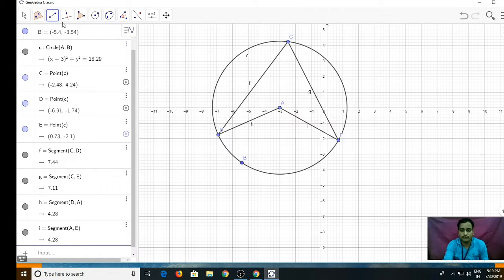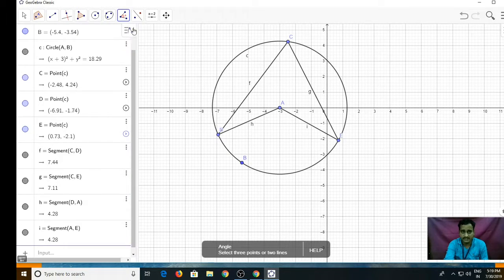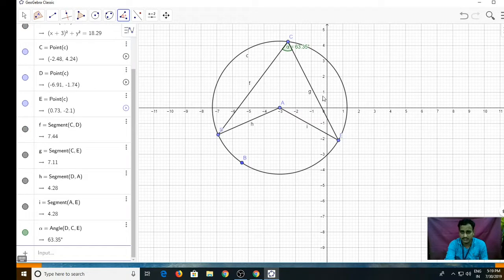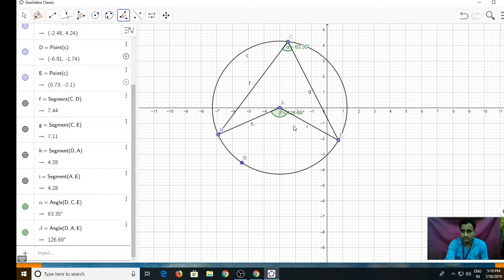Now what we are going to do further is, we are going to measure this inscribed angle and this central angle. We all know DAE is the central angle. So let us do this with the help of angle tool. You have to select the angle tool. Let me click on the points that is D, C, and E in clockwise direction. So my angle is 63.35 degrees. Now same thing we are going to do with central angle, that is D, A, and E.